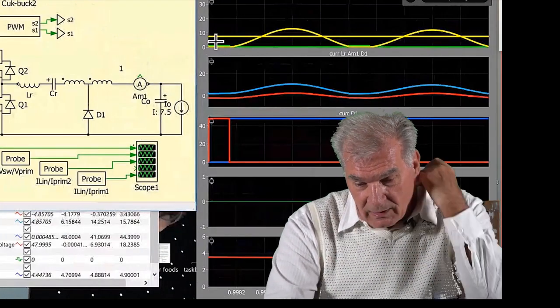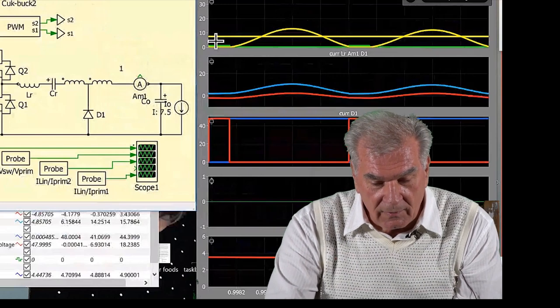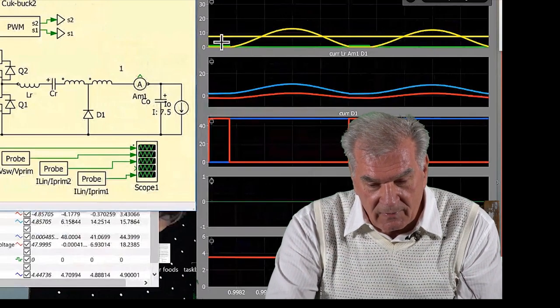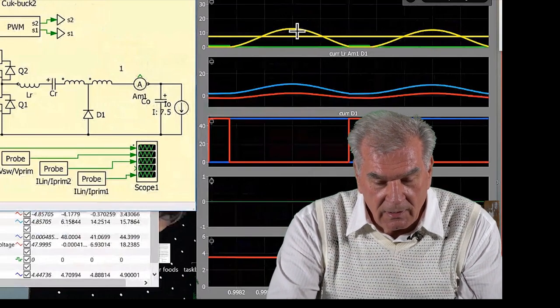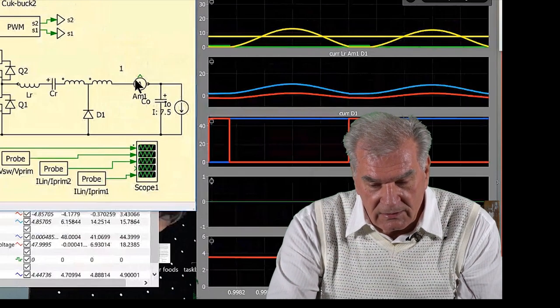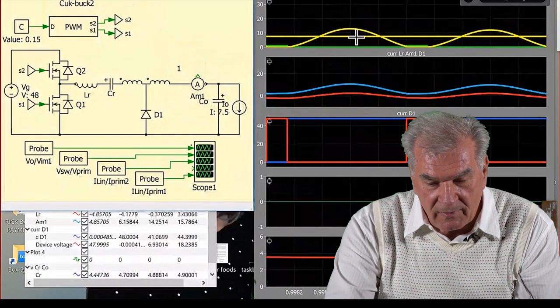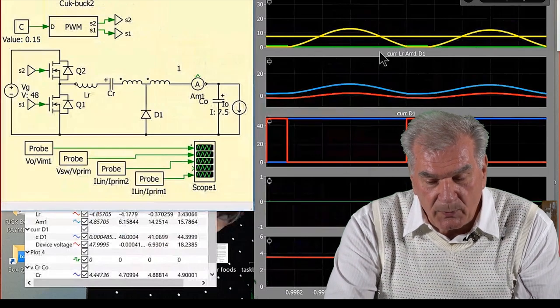When I reduce the current from 15 amps to 7.5 amps, you can see the yellow on the top channel shows a straight DC line. The DC current is now 7.5 amps.